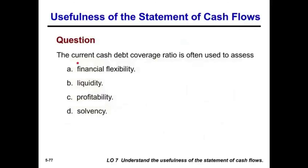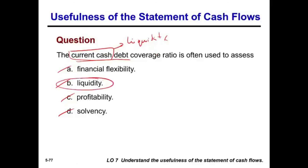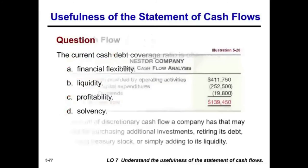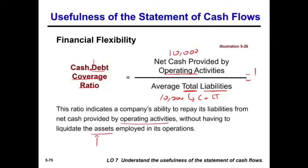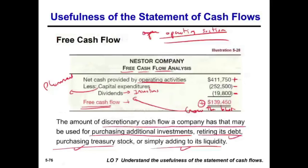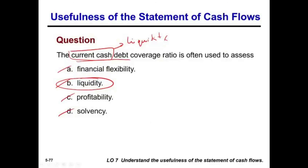The current cash debt coverage ratio assesses liquidity — whether the company is sufficiently liquid in the short term. The overall cash debt coverage ratio assesses financial flexibility — the more coverage, the more flexibility. When you have less debt, you have more financial flexibility, both as a company and as an individual.